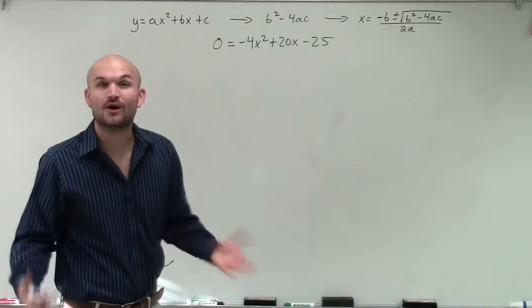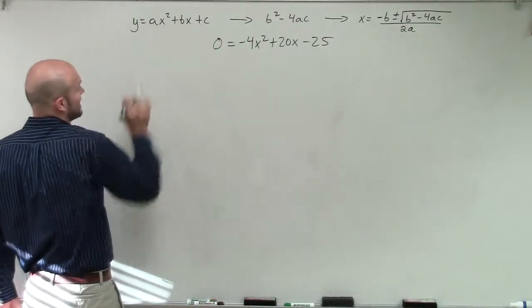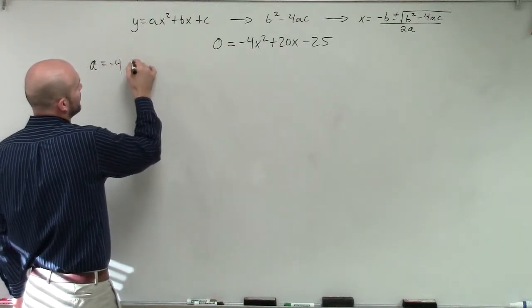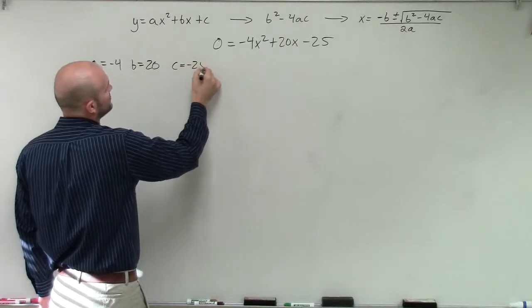To do that though, we have to make sure we know what our a, b, and c are. So I make sure that my equation's in standard form, and then I just label a, b, and c. So a equals negative 4, b equals 20, and c equals negative 25.